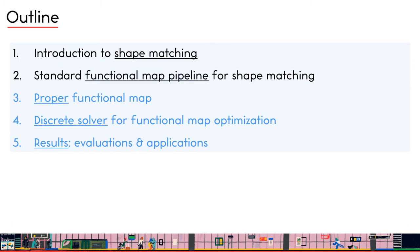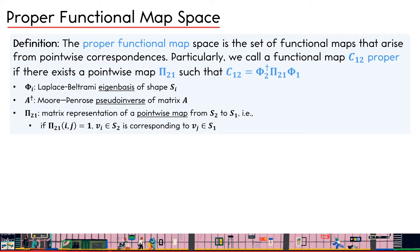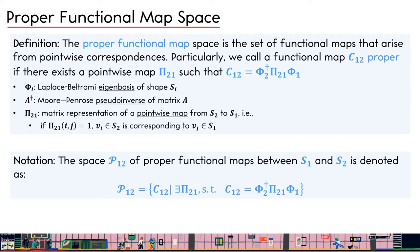To address these issues, we introduce the concept of a proper functional map. We regularize the functional map optimization in the space of proper functional maps, and propose a discrete solver to efficiently deal with this hard constraint. A functional map is proper if it arises from a point-based map — meaning there exists a point-based map pi such that this equation holds, where phi is the Laplacian-Beltrami eigenbasis of shape S. We collect all proper functional maps and denote the corresponding space as P. Note that this space is discrete and exponential in size.